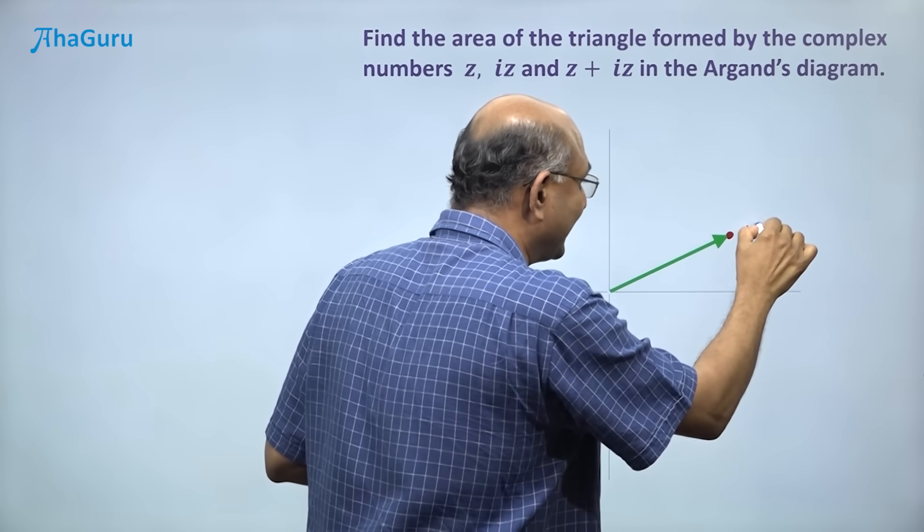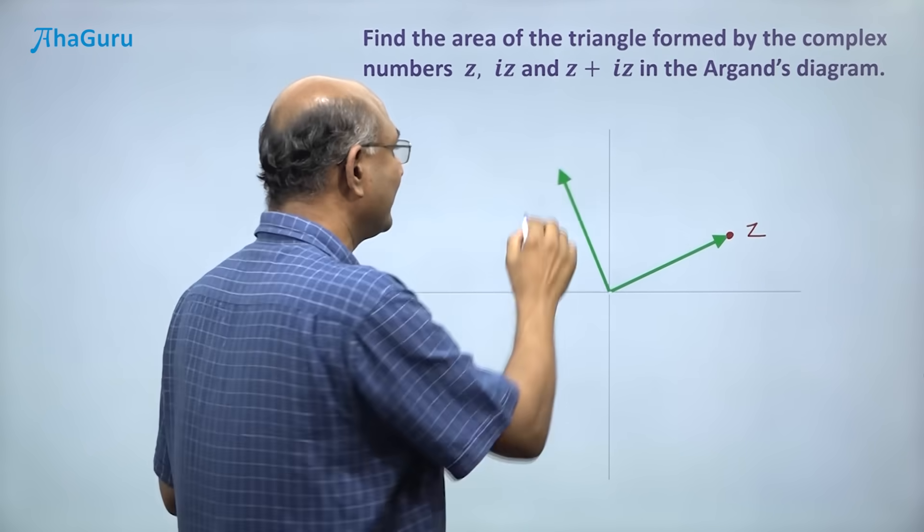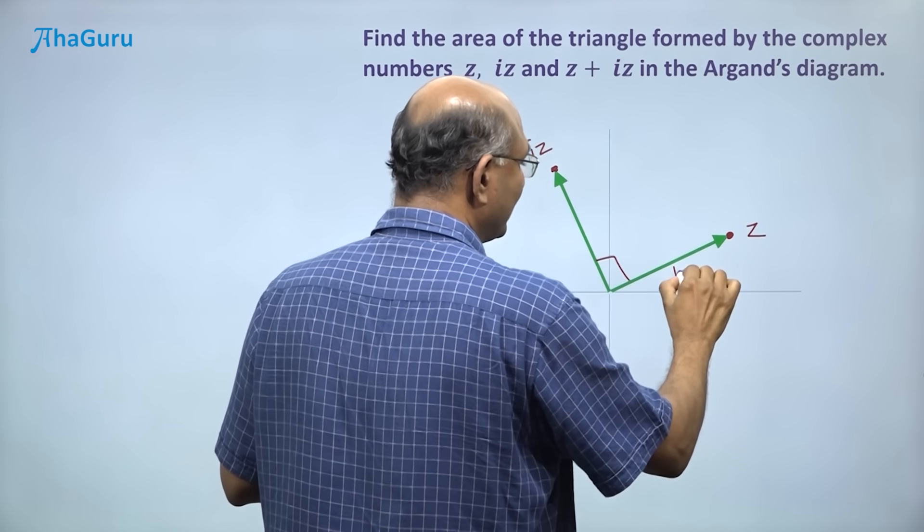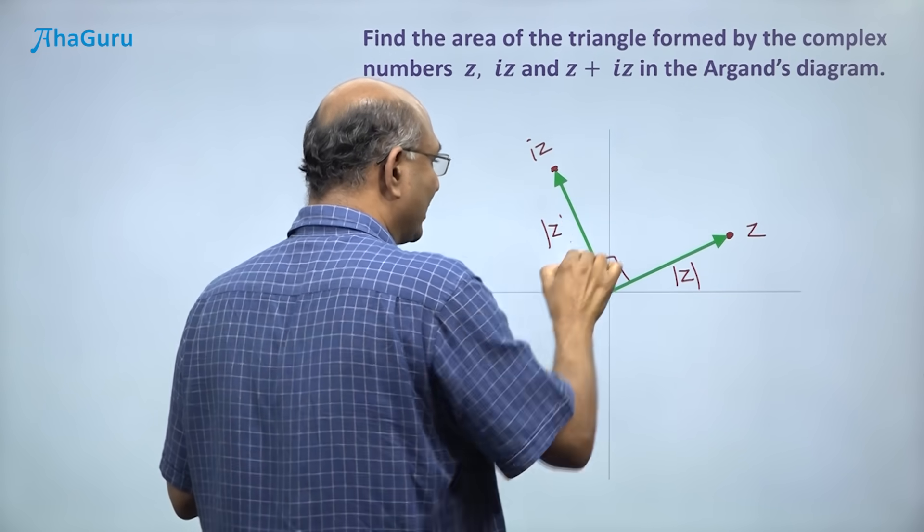So let me say that this point was z. What is iz? It will be a 90 degree turn. Right? So this is iz and this would be 90 degrees. You know that this length is modulus of z. This length is also modulus of z.